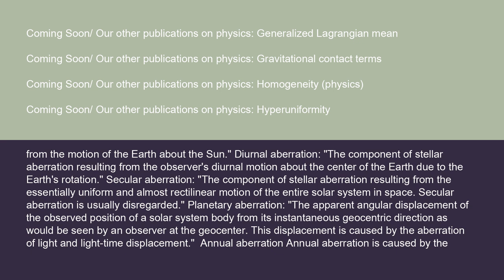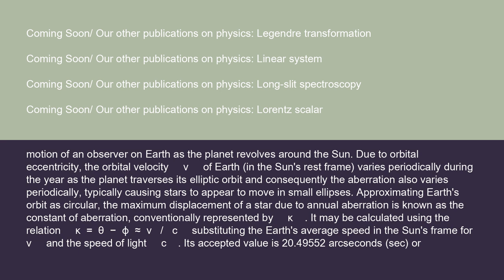Annual aberration is caused by the motion of an observer on Earth as the planet revolves around the Sun due to orbital eccentricity. The orbital velocity v of Earth in the Sun's rest frame varies periodically during the year as the planet traverses its elliptic orbit, and consequently the aberration also varies periodically, typically causing stars to appear to move in small ellipses. Approximating Earth's orbit as circular, the maximum displacement of a star due to annual aberration is known as the constant of aberration, conventionally represented by kappa.